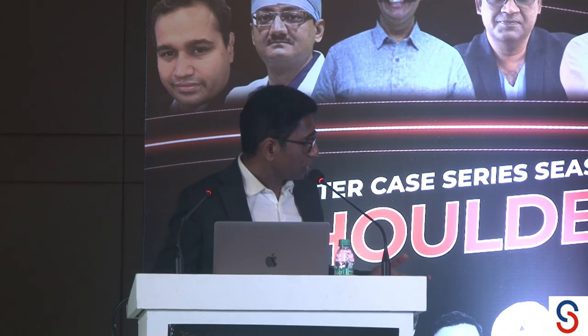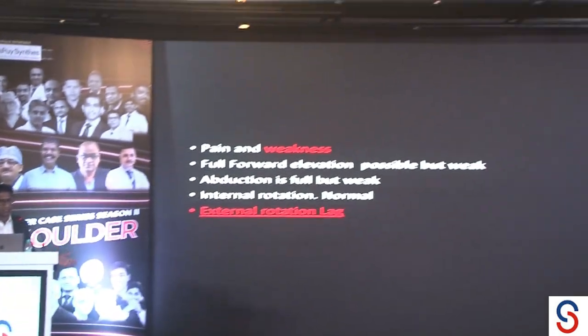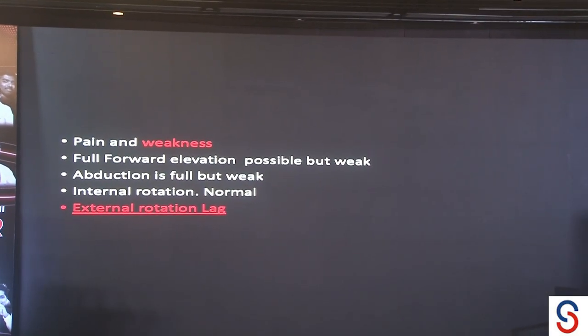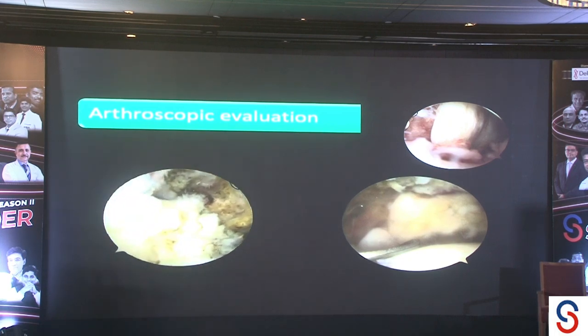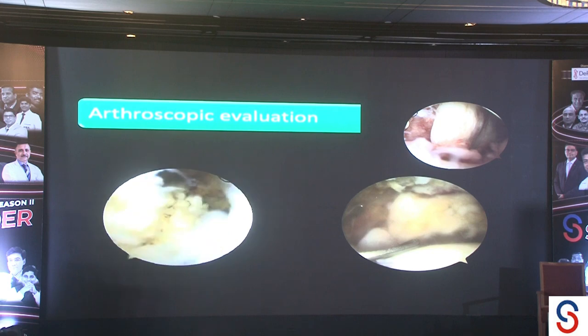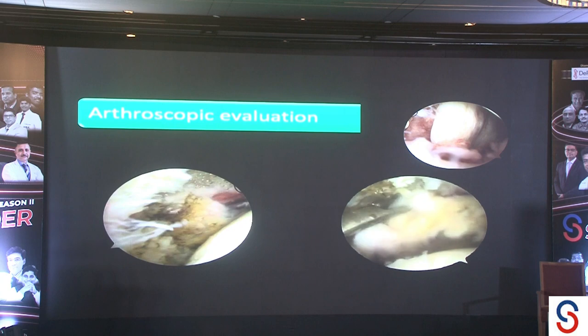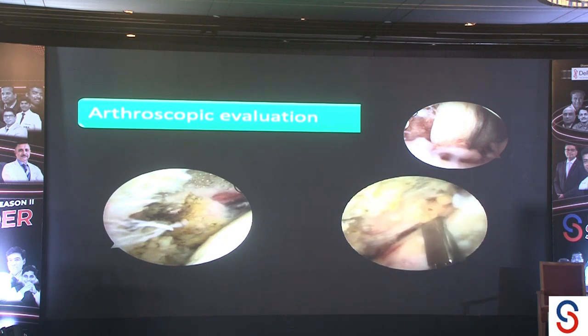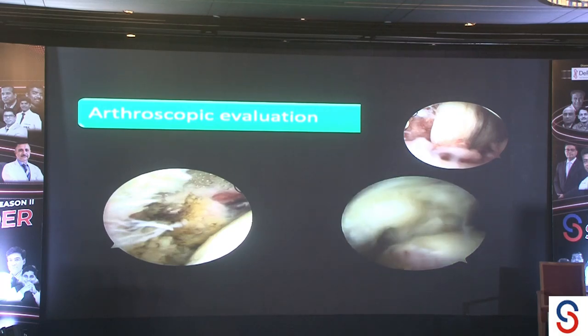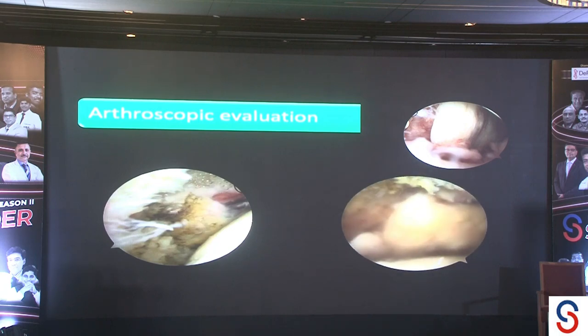This patient has pain, weakness, full forward elevation that is painful and weak, full abduction that is weak, normal internal rotation, and external rotation lag at zero degrees. This is a supra-infra tear — similar to another case being shown — but the functional deficit is totally different. He has elevation possible but painful, with a complete external rotation lag. Looking at the arthroscopic view, many of us decide only after going in arthroscopically. The subscapularis was intact, biceps was absent. That is the quality of the remaining tendon — you can see the infraspinatus remnant; there is no supraspinatus, you cannot bring it back at all.